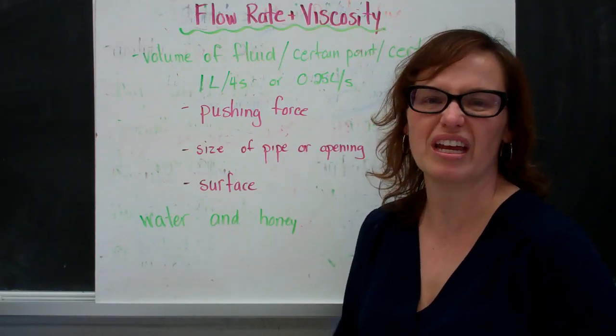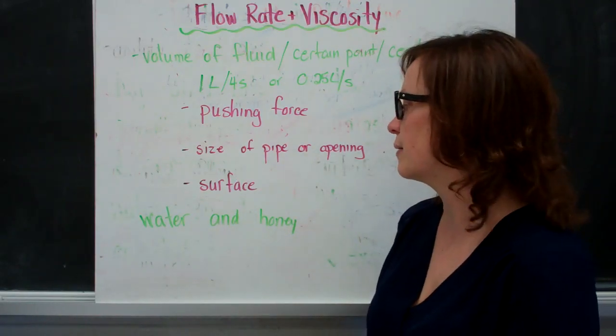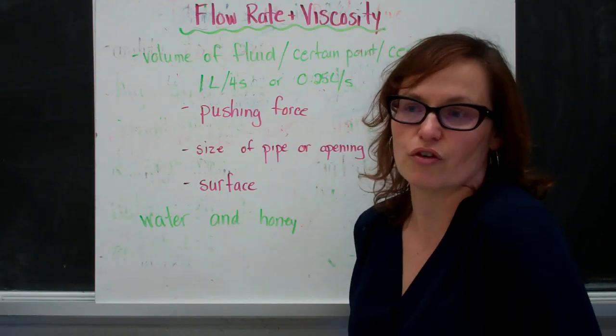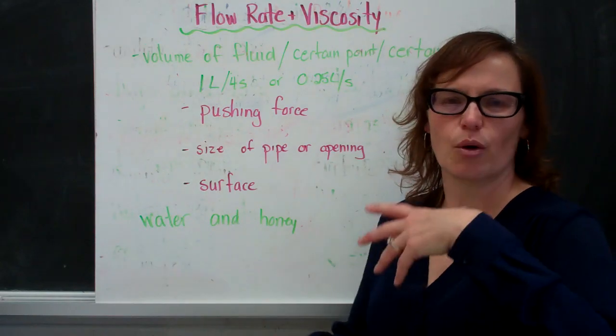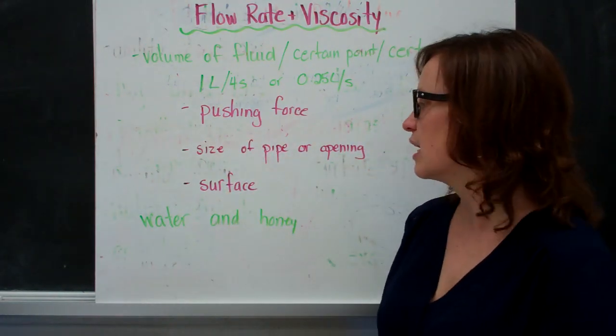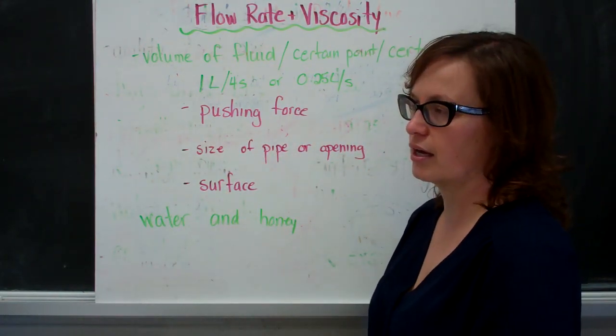The size of the pipe or the opening, bigger or smaller, determines its flow rate, and as well does the surface. So if it's a smooth, clear surface, it's going to have a high flow rate, and if there's debris or damage or any kind of bumps and curves, it's going to have a slower flow rate.